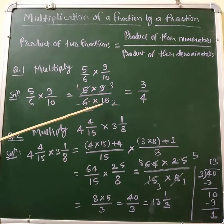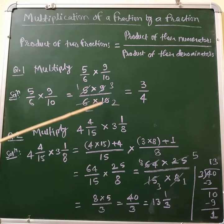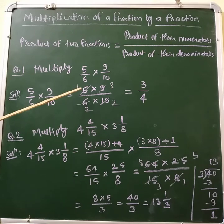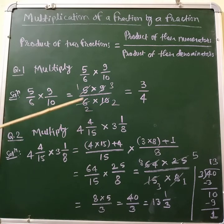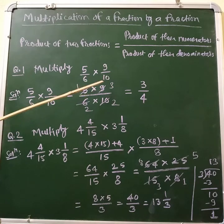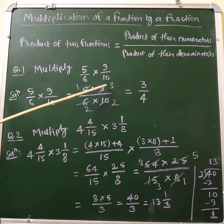Here, 5 in the numerator and 10 in the denominator — 5 and 10 are both divisible by 5, giving 1 and 2. Similarly, 6 and 9 are both divisible by 3, giving 2 and 3.